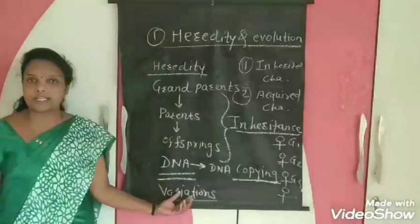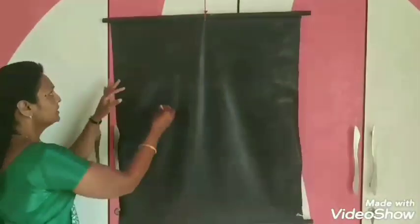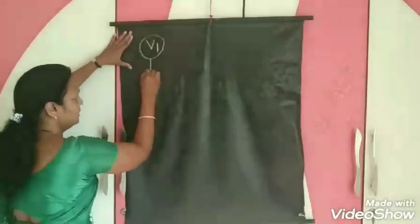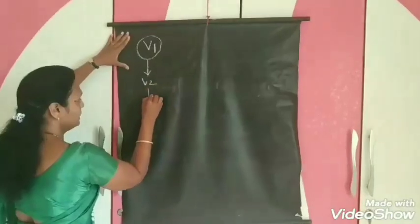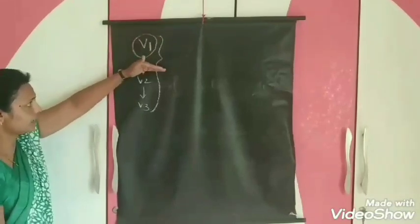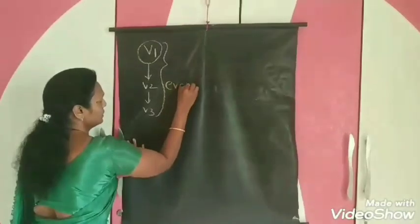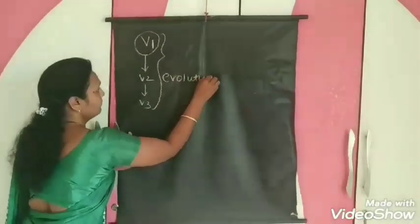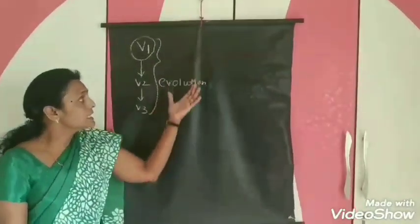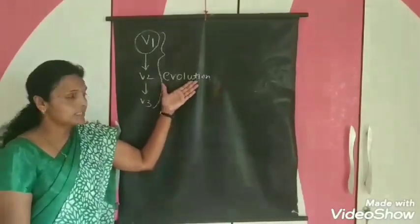Because of these variations, we do not look exactly like our ancestors. Variations pass from first to second generation, second to third. This is also known as evolution.